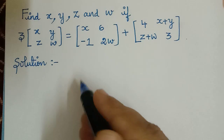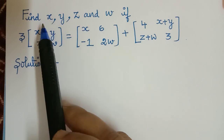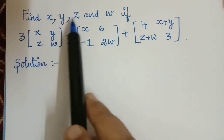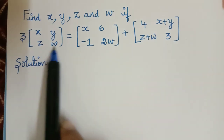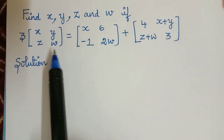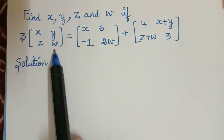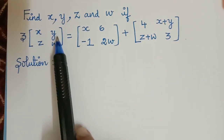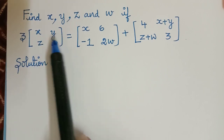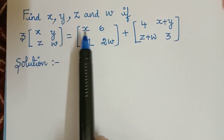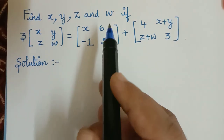Dear students, now let us solve this problem. The question is: find x, y, z, and w if this equation is given. They have given x, y, z, and w which are unknown. So we have to find the values of these unknowns by comparing these two equal matrices, because they have given an equality sign here.